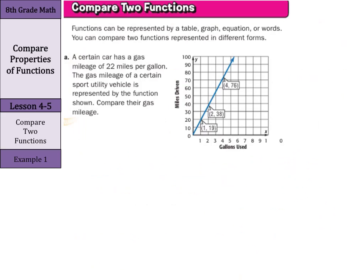So, let's continue. Functions can be represented by a table, graph, equation, or words. You can compare two functions represented in different forms. A certain car has a gas mileage of 22 miles per gallon. The gas mileage of a certain sport utility vehicle is represented by the function shown. Compare their gas mileage.